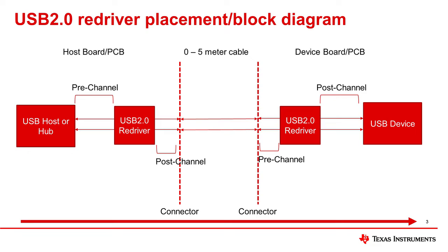First, let's discuss re-driver placement from an example host-side application. The signal originates from the host or hub, being carried through the PCB until eventually reaching the connector on the device. Next, the signal is carried through a cable of unspecified length, typically anywhere between less than a meter and five meters. Afterwards, the signal reaches the device-side connector.